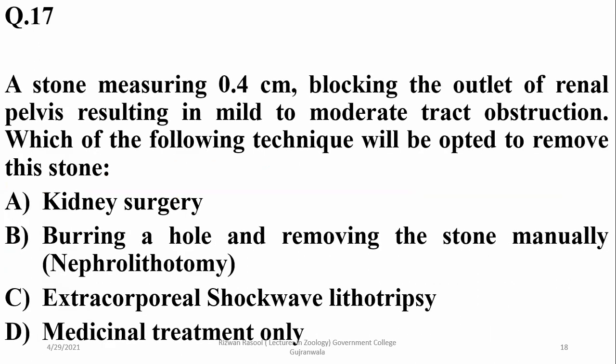A stone measuring 0.4 centimeters blocking the outlet of the renal pelvis results in mild to moderate tract obstruction. The technique used to remove stones from the kidney or urinary tract is extracorporeal shock wave lithotripsy, so Charlie is the answer.